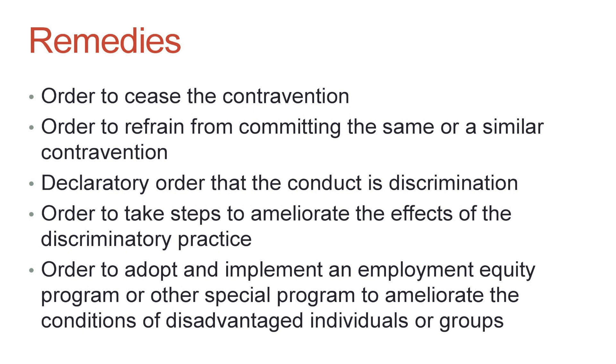In your complaint form, you also write out what you're looking for — what kind of remedy you're hoping to get. The tribunal can order a variety of remedies: they can order the respondent to stop contravening the code and not commit the same violation in the future, declare that the conduct was discrimination, or order the respondent to do things that help prevent discrimination — like changing a policy or undergoing training.